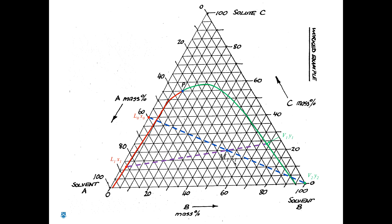To answer that question, we'll look quickly at the first stage, which has already been solved. In the first stage we were able to solve analytically for the value of Z1. We wrote our total mass balance and our solute mass balance, and with the information we were given, we were able to solve for Z1.